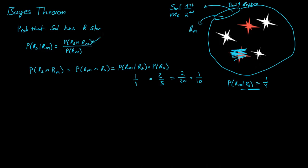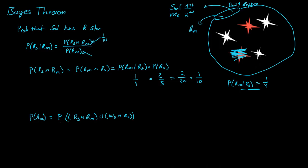So now we know this is one-tenth. Now, how many different ways can I get a red star? The probability of me getting a red star is equal to the probability of Sal getting a red star and me getting a red star — that's one way — or Sal could get a white star and I could get a red star. These are the two different ways of me getting a red star.